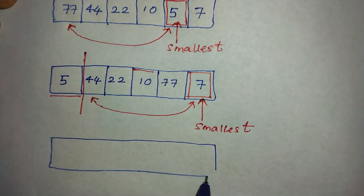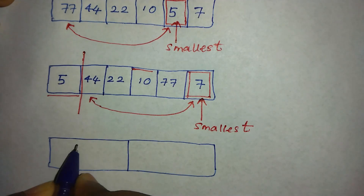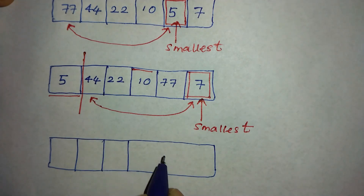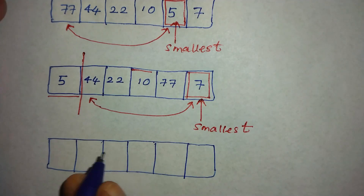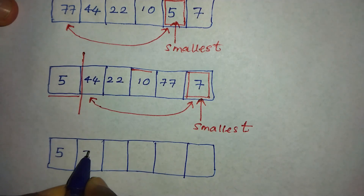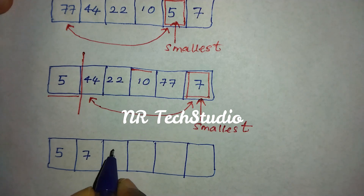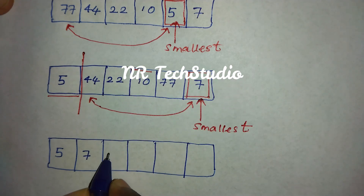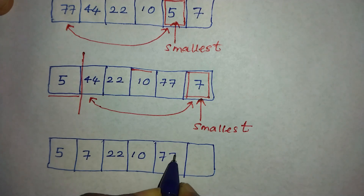This should repeatedly happen until the end of the array — meaning until the last index of the array. Now 7 is going to the left side of the sub-array.